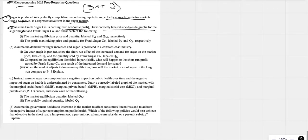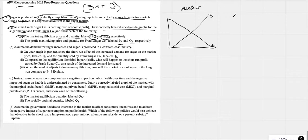Draw a correctly labeled side-by-side graph of the market and Frank Sugar Company showing the price and quantity PM and QM, profit maximizing price and quantity for sugar, PF, QF. All right, so we're just doing a side-by-side graph. Perfectly competitive, right? So supply, demand, here's our market. Easy enough.